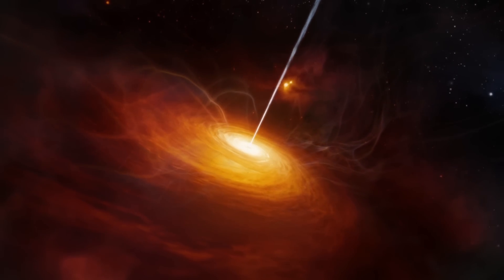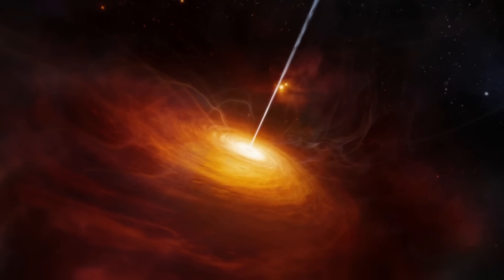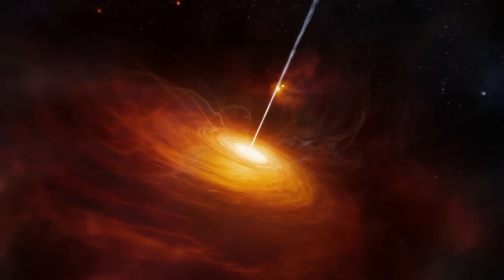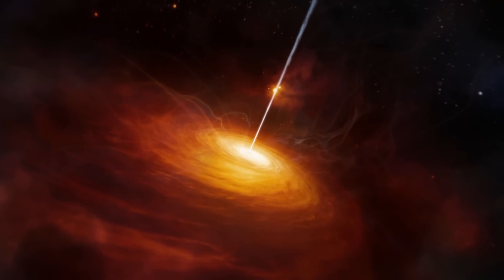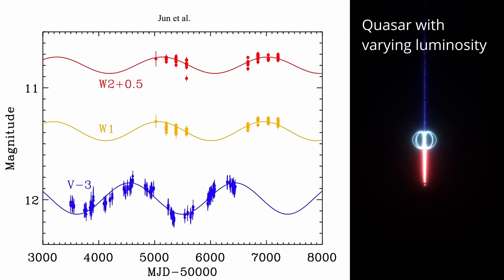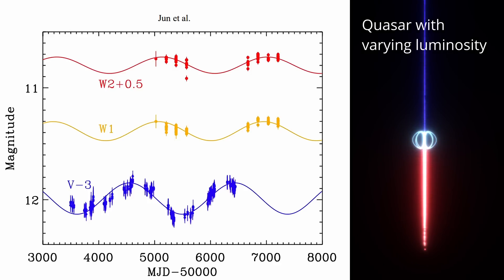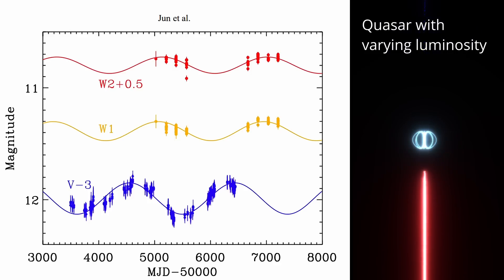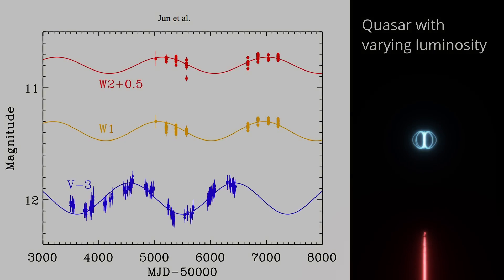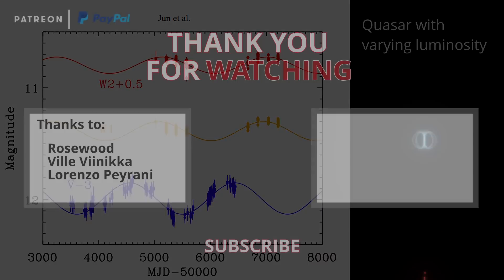Furthermore, the rapid variability observed in the emissions from active galaxies and quasars is also consistent with the dynamic processes proposed in Lerner's model. The fluctuating intensity and spectral characteristics of these emissions could reflect the episodic formation and decay of plasmoids, as well as the interactions between these energy structures and the surrounding plasma environments.